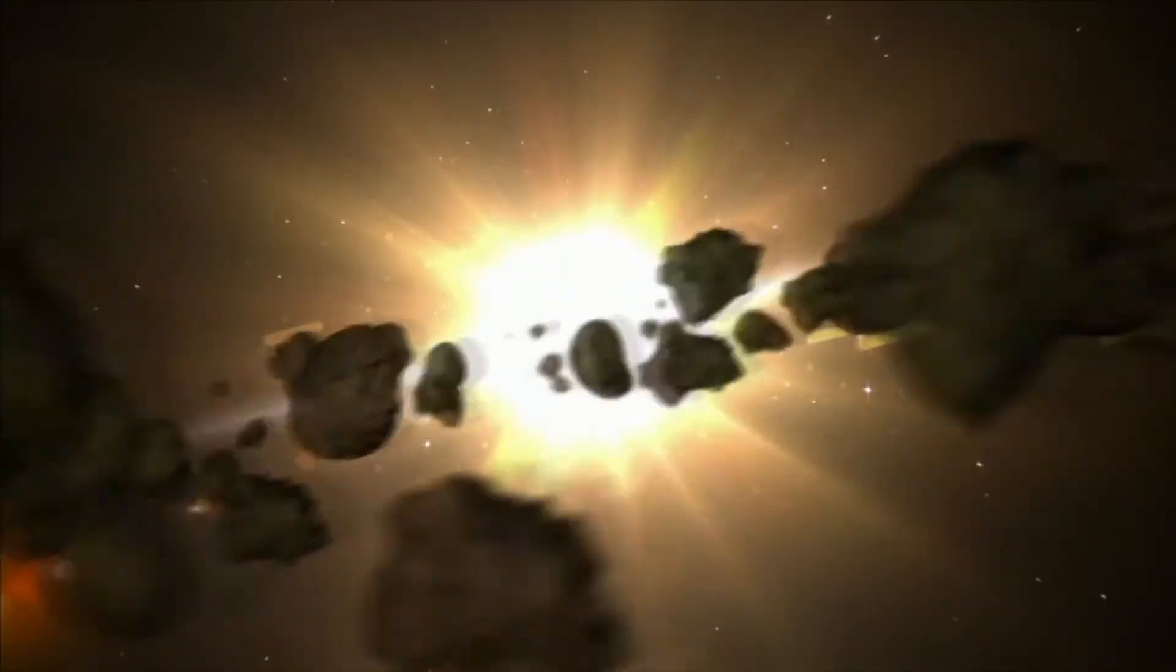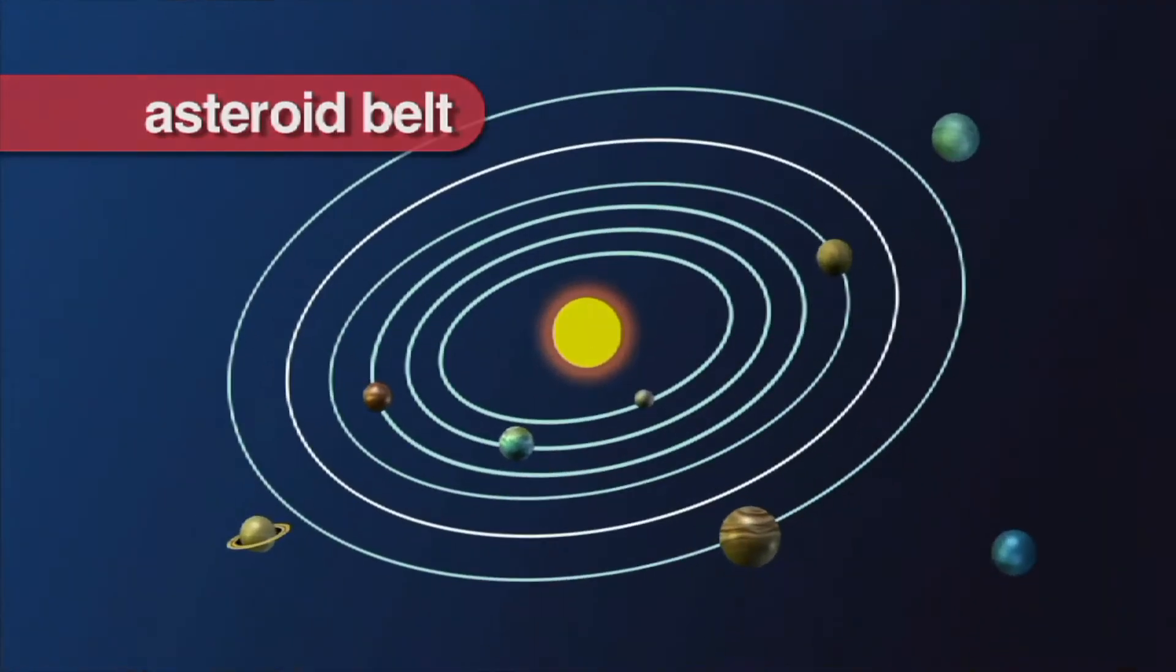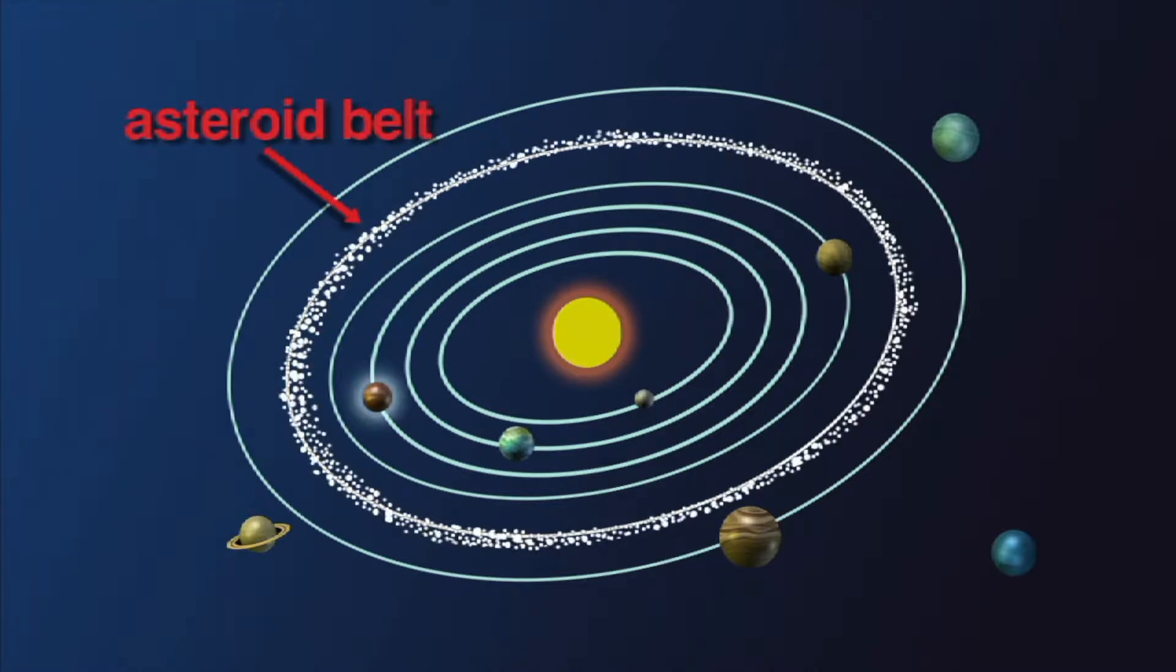Most asteroids are found in the asteroid belt. The asteroid belt is a region of space between the orbits of Mars and Jupiter where most of the asteroids in the solar system are found.